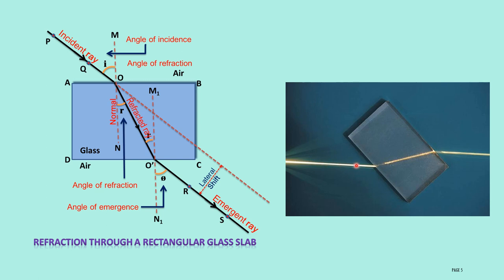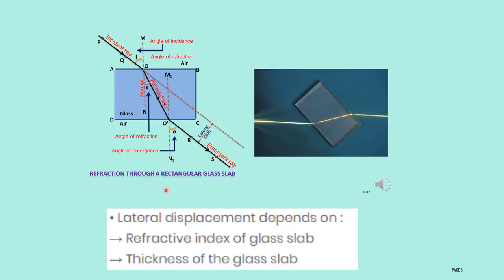You can observe refraction through a rectangular glass slab — if this is the incident ray, it will get refracted, and after reaching the surface it will emerge. Lateral displacement occurs because of the difference in speed of light in different media, causing bending and then emergence of the rays. Lateral displacement depends upon the refractive index of the glass slab and the thickness of the glass slab — because of these two reasons, you can determine the lateral displacement.